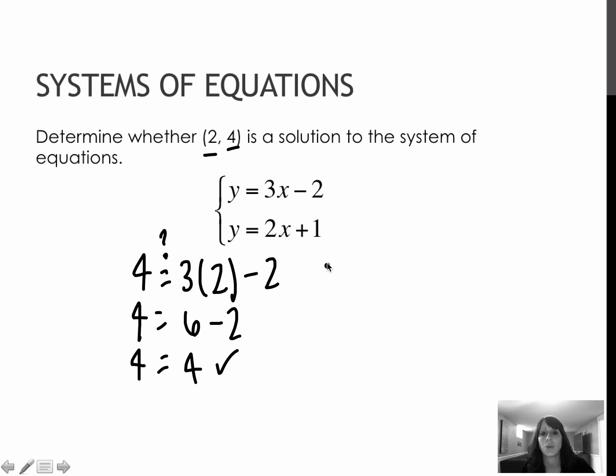And now I'm going to check the second equation. 4 equals 2 times 2 plus 1. 4 equals 5. That's not correct. So no, it's not a solution to the system. It is a point on my first line, but not for my second line.